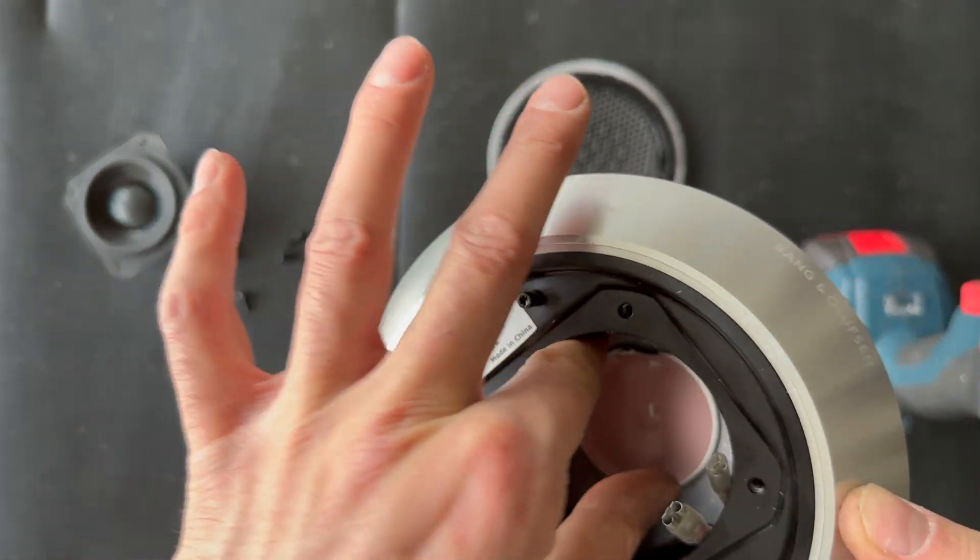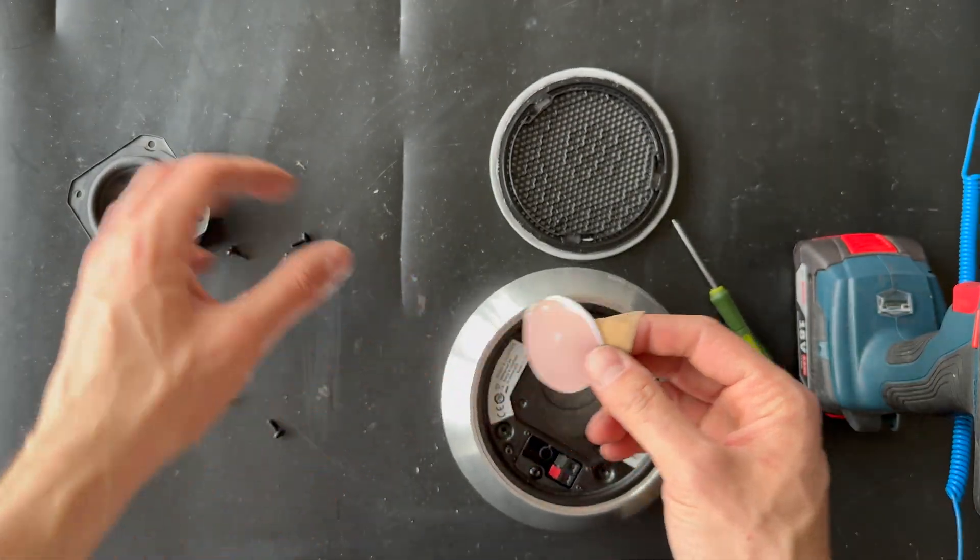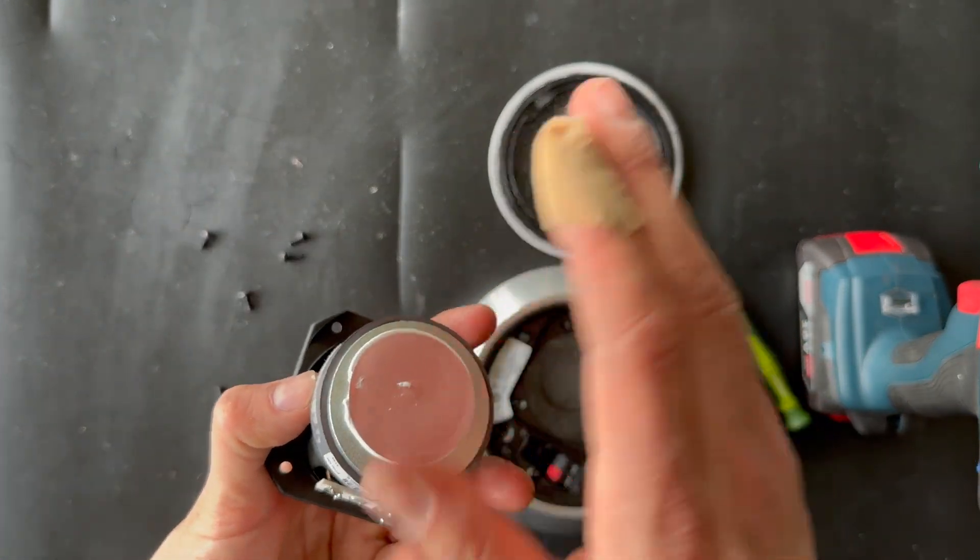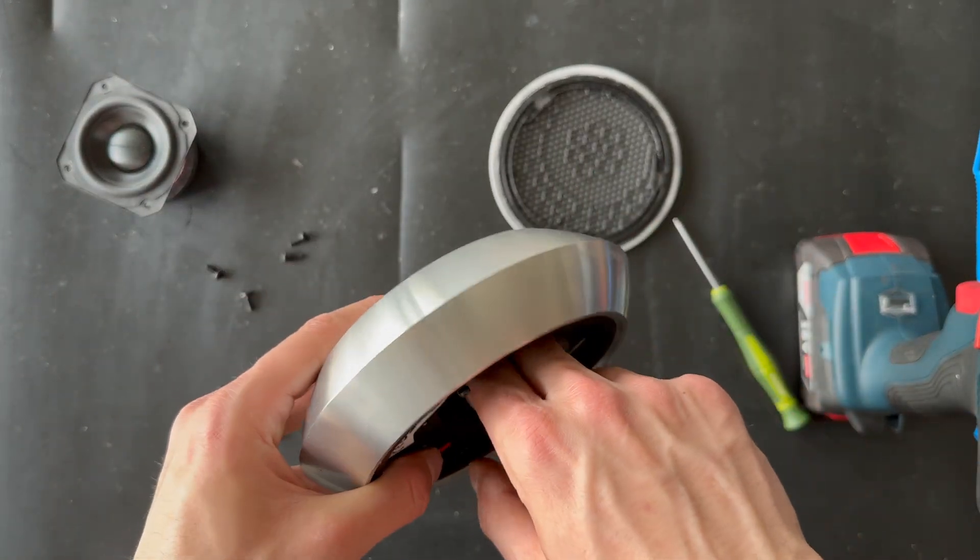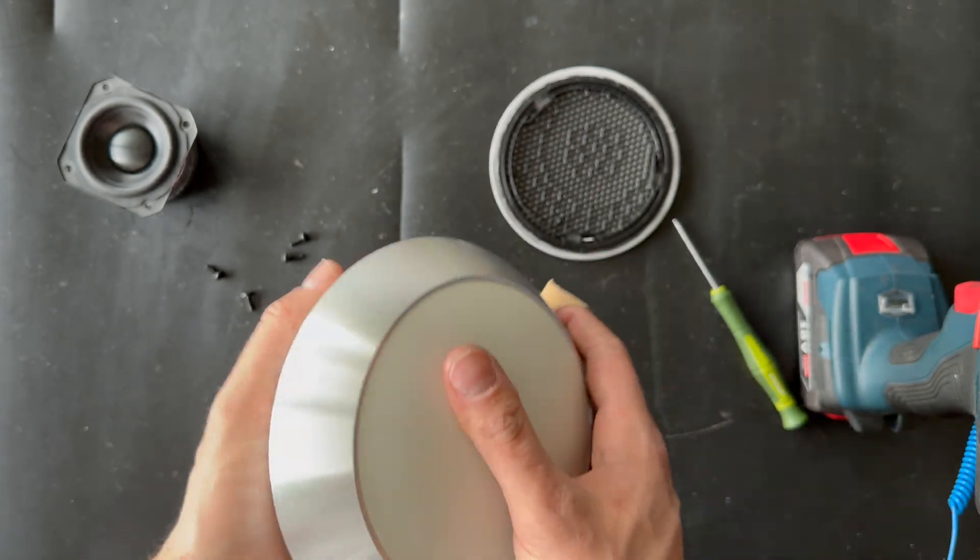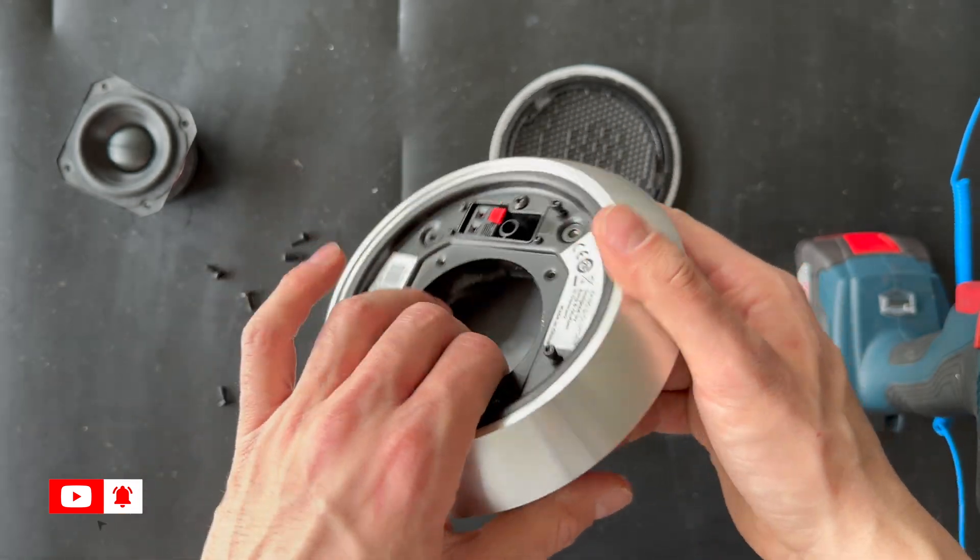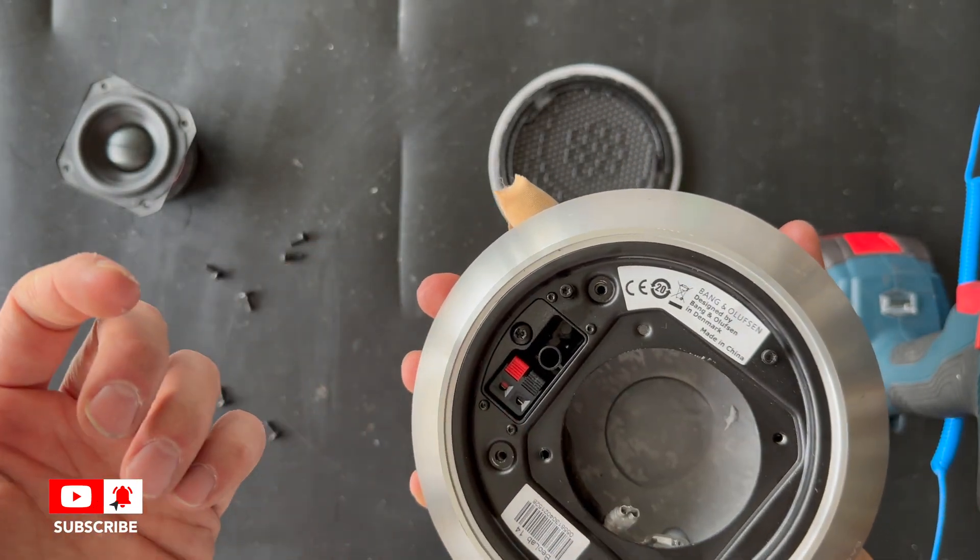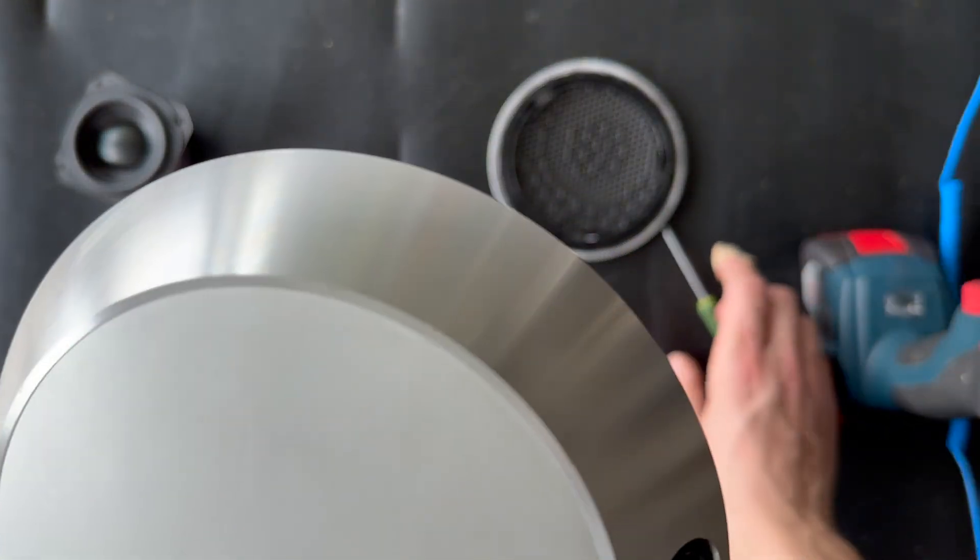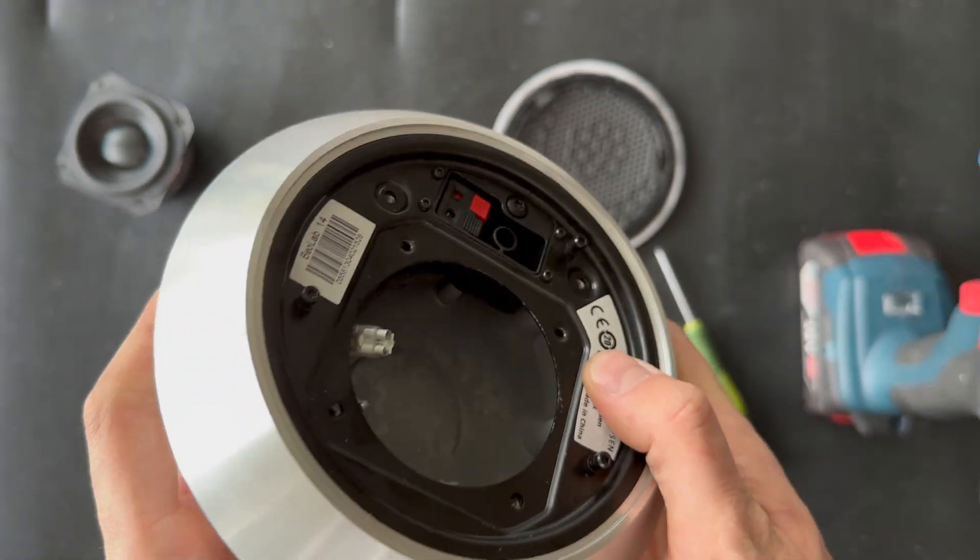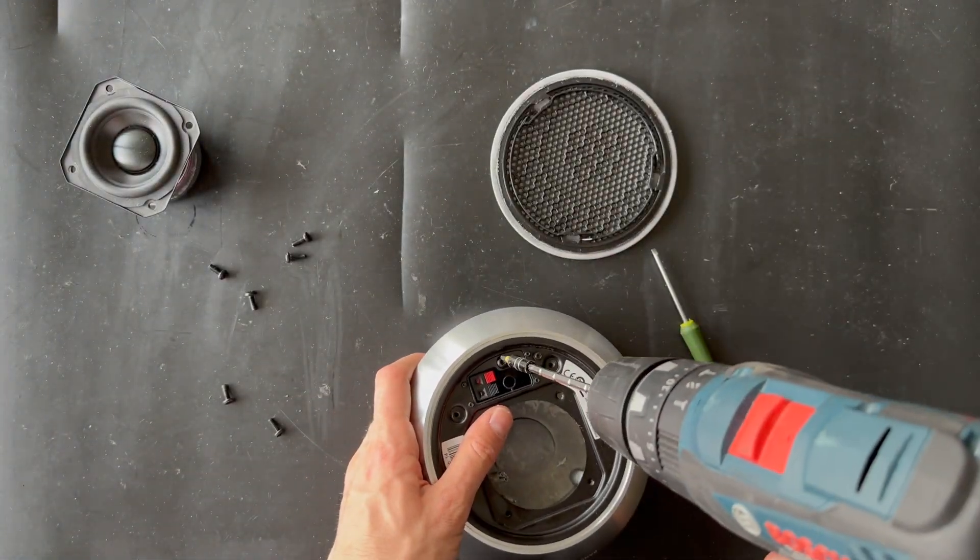Here's the pad so the woofer doesn't hit the back of the chassis - prevents vibration. I think that's it. This is probably the easiest disassembly process for a Bang & Olufsen product. I don't know if we can remove this. No. This one's missing a screw.